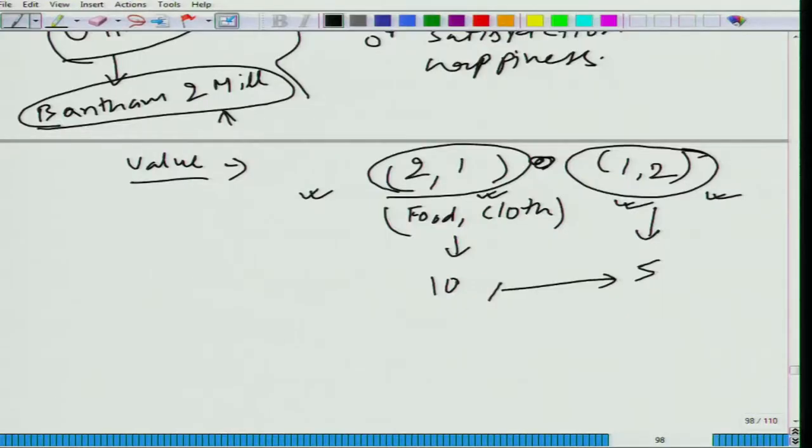But even when you are not able to figure out 10 and 5, you are able to figure out here it is more and here less in comparison to the first one. That is good enough for comparison. So, this is a much more stronger assumption than the comparison, the assumption required for comparing.